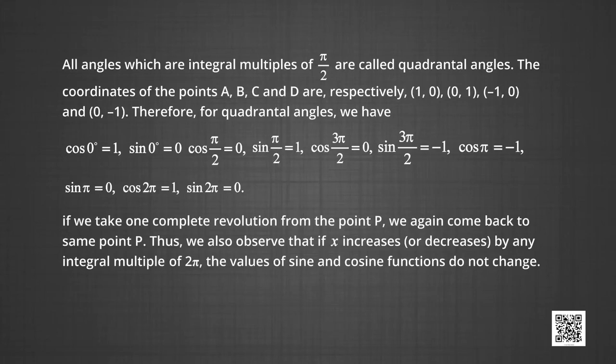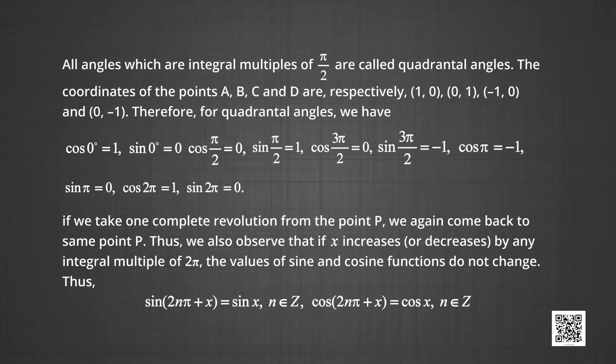If we take one complete revolution from point P, we again come back to the same point P. Thus, if x increases or decreases by an integral multiple of 2π, the values of the sine and cosine functions do not change. Therefore, sin(2nπ + x) = sin x and cos(2nπ + x) = cos x, where n belongs to the integers.